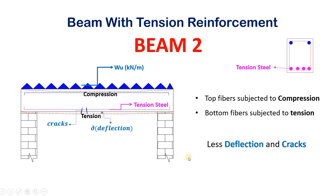With tension reinforcement, how does the beam behave? When the same load wu is applied on beam two, beam two deflects only a very small amount compared to beam one. Without reinforcement, the beam deflects more. This is because steel is a ductile material which is good at tension, so all the tensile load coming on the beam is taken by the steel reinforcement.